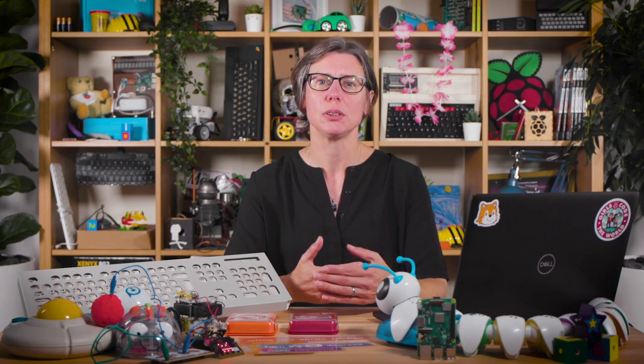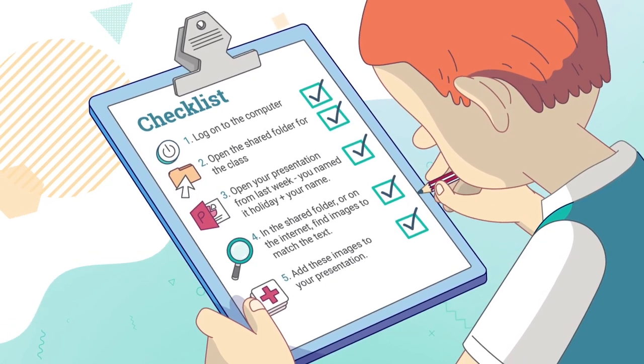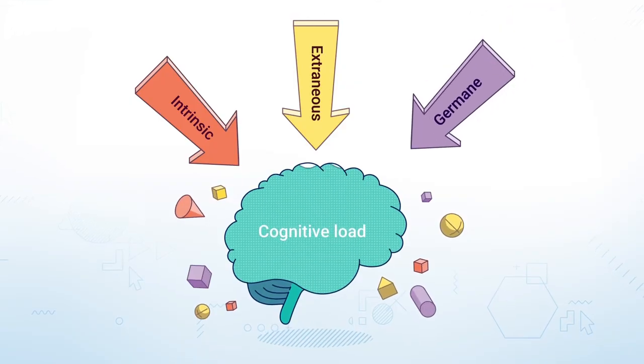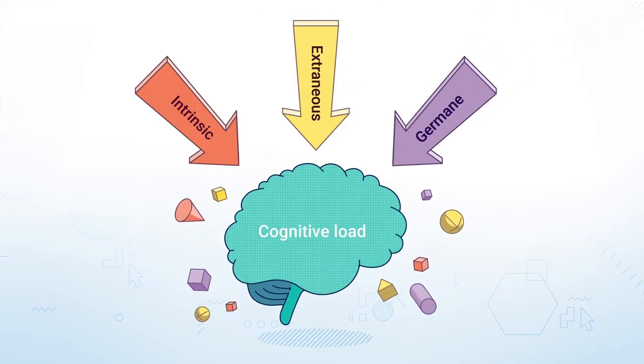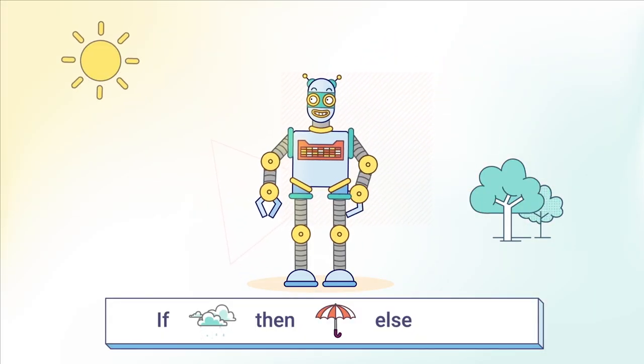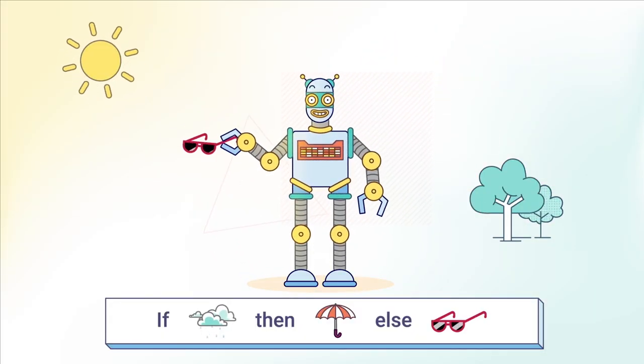There are currently over a million pupils with special educational needs and disabilities, or SEND, in English schools. This free course will explore some effective approaches to teaching computing to learners with SEND, and you'll learn about a range of activities and resources that will ensure all students are included in your lessons.